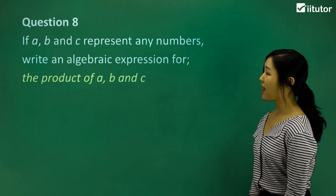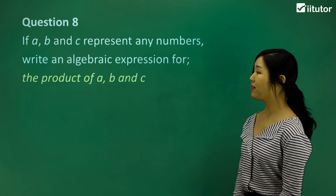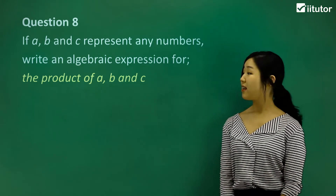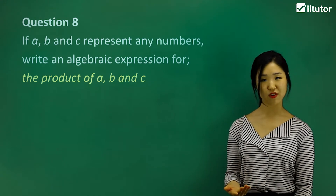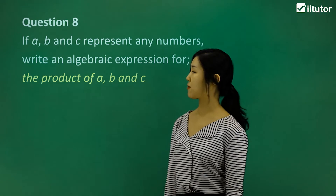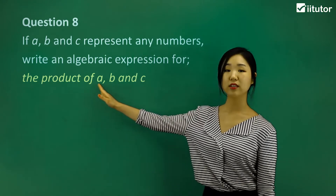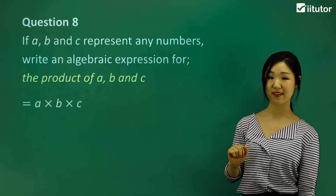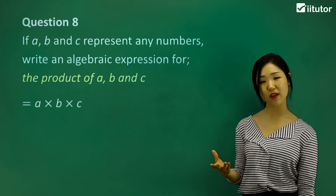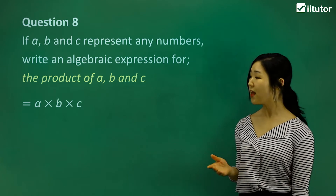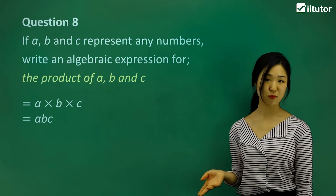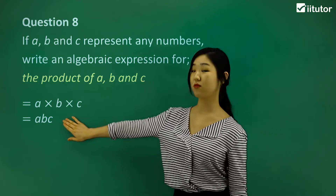Question eight: if a, b, and c represent any numbers, write an algebraic expression for the product of a, b, and c. Product means multiplication — that's the key word here. So a times b times c is what we want, but it's best not to put the multiplication sign when leaving answers in simplest form. So it should just be abc. If there's nothing in between the variables, it means multiplication. Keep it in its simplest form.